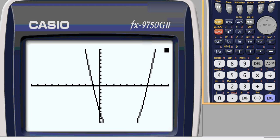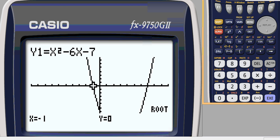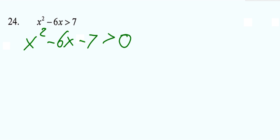We'll do a g-solve root to get the actual roots, the actual x-intercepts, at negative 1 and 7. So the graph looks like this, negative 1 and 7.